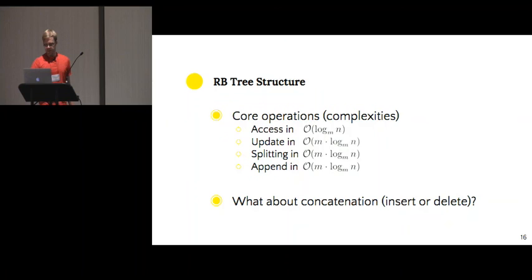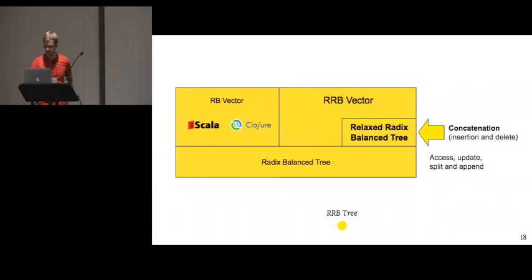But what about concatenation, or insertion or deletions? Well, the only way to implement them on this structure is in linear time, so this doesn't suit us. Especially, in our case, we had a limitation for parallel vectors, which were not getting parallelized because of this limitation. So, now we move on on how to add another layer of abstraction on top of this tree.